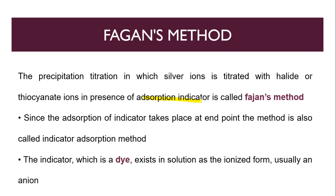This is very important: we are using the adsorption indicator. What is an adsorption indicator? The reaction of the indicator occurs at the surface of the precipitate, so this is known as an adsorption indicator. Since the adsorption of the indicator takes place at the end point, there is an adsorption of indicator at the precipitate. It is also called the indicator adsorption method.